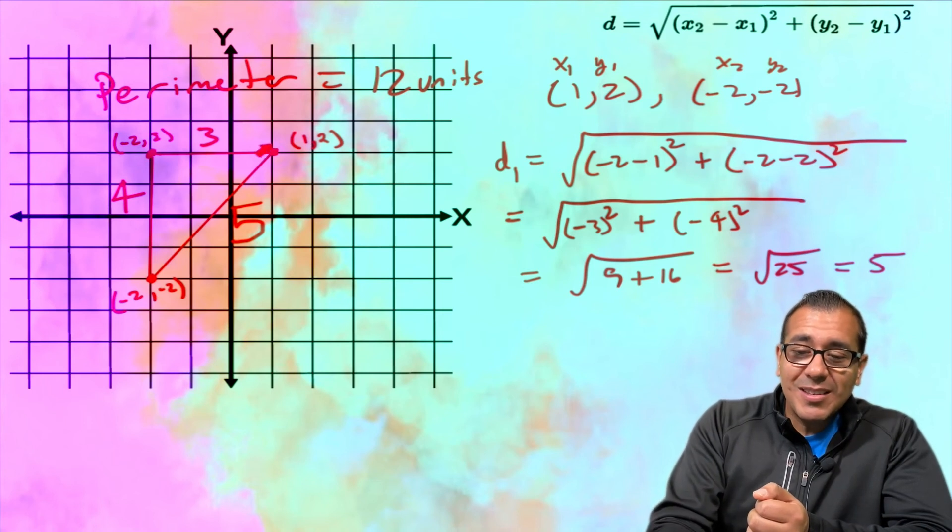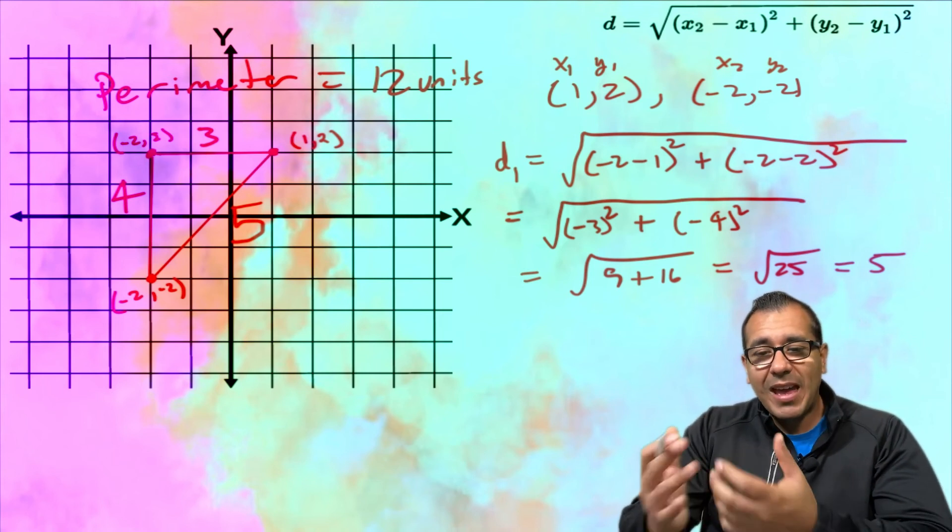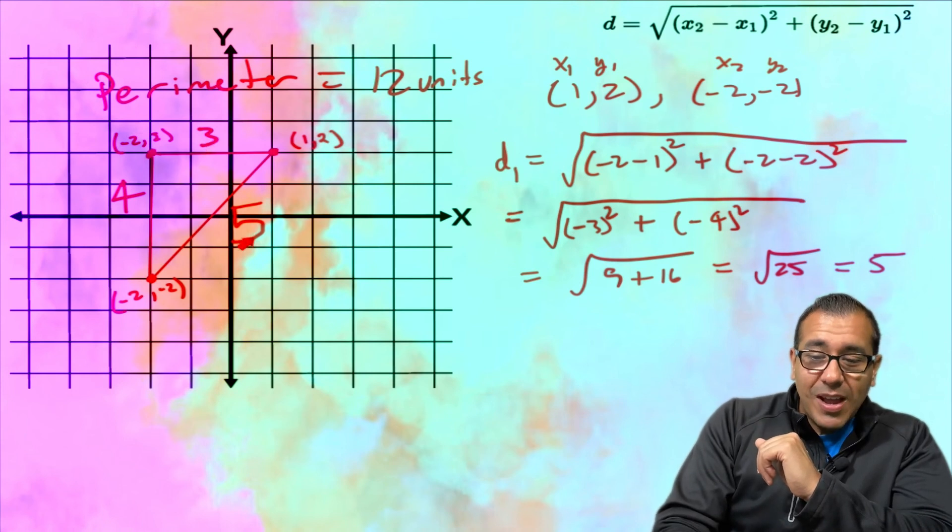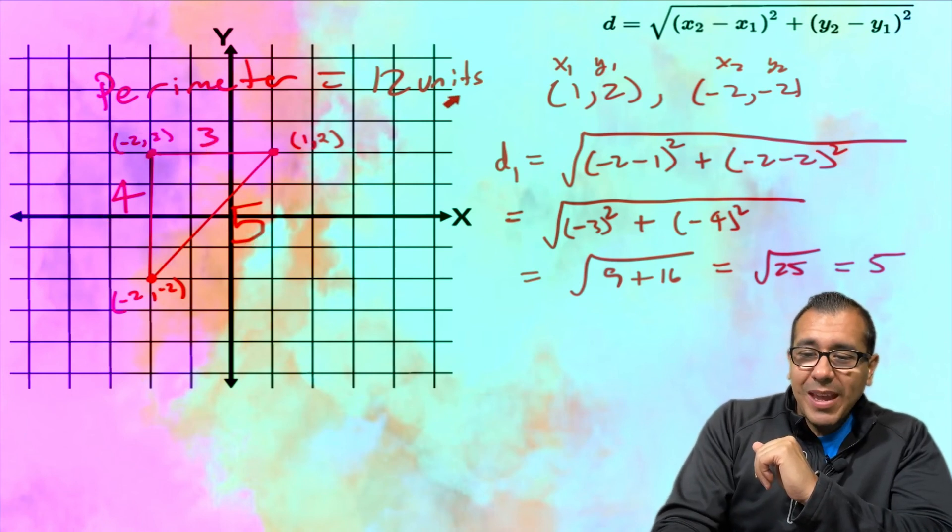And then once you have those lengths we just add them all up. So in this case we add up 3 plus 5 which gives us 8 plus 4 and we get a total of 12 units for our perimeter.